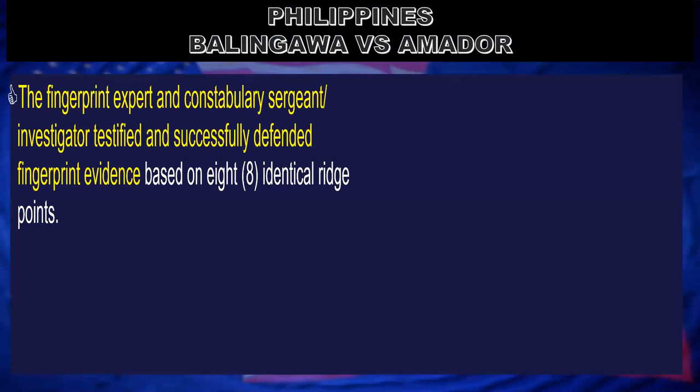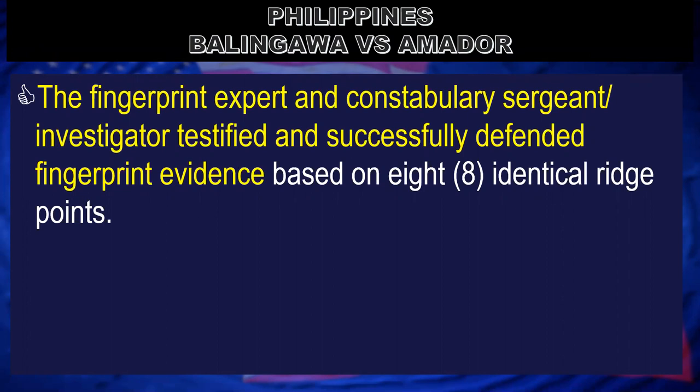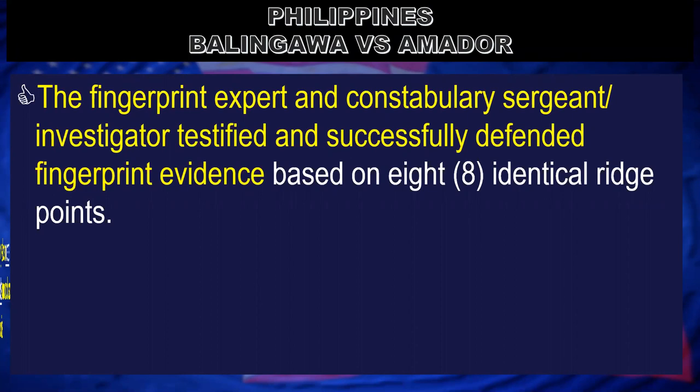In the Philippines, in Balingawa versus Amador, a fingerprint expert and Constabulary investigator successfully defended fingerprint evidence based on eight identical ridge points — matching the location of bifurcations, ending ridges, and dots corresponding with the fingerprint of the suspect. Even with only eight identical ridge points, positive identification could be established. The admissibility was based on the rare identical characteristics: the appearance, location, size, and frequency of bifurcations, short ridges, dots, and island ridges in the fingerprint.